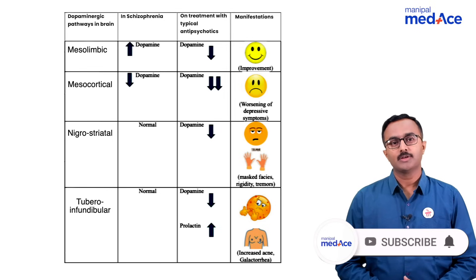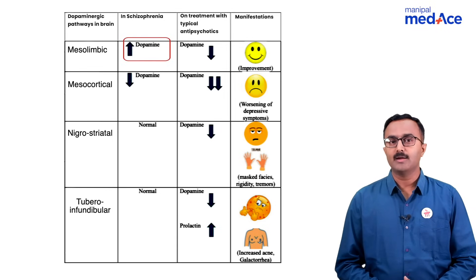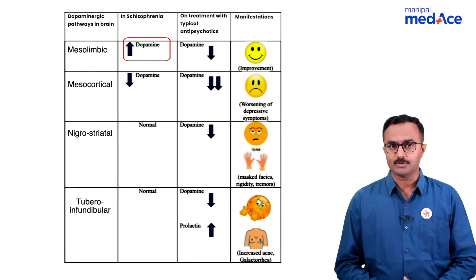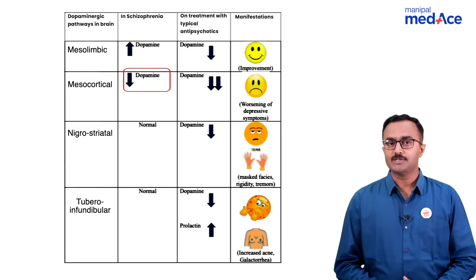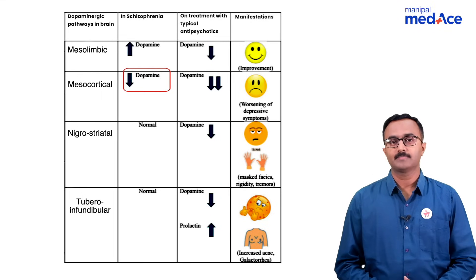In schizophrenia, it is the dopaminergic excess in the mesolimbic system which causes positive symptoms. Relative deficiency in the mesocortical pathway causes negative symptoms.